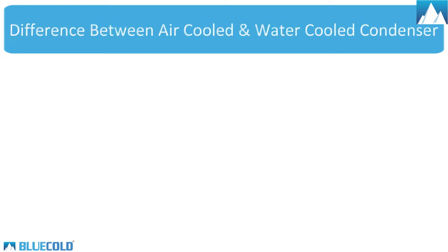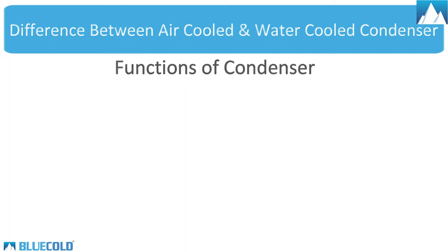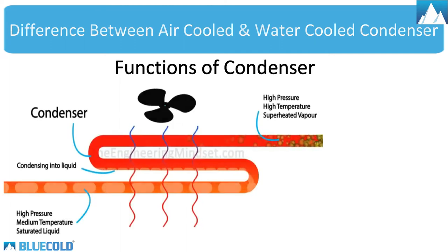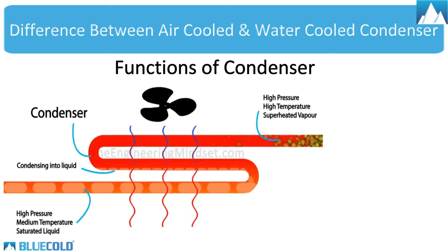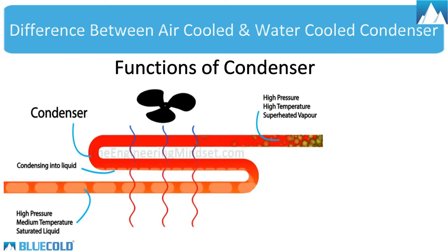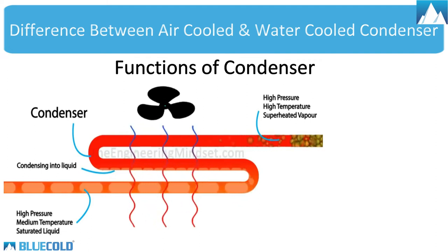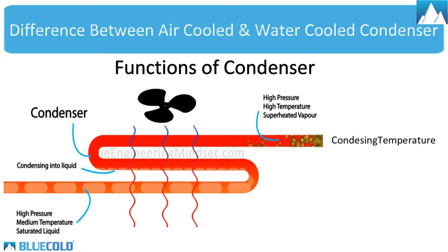Difference between air-cooled and water-cooled condenser. It is necessary to know what is the main function of the condenser before we know the difference between the two. The refrigerant which flows inside the condenser is at a higher temperature, and the condenser rejects its heat outside with the help of air and water. When the heat is removed from the gaseous refrigerant, it becomes a liquid refrigerant. The refrigerant temperature in the condenser is known as condensing temperature.